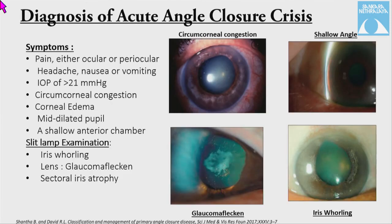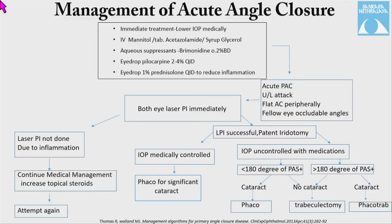Acute angle closure crisis presents with ocular or periocular pain, headache, nausea, or vomiting, and an IOP spike of more than 21 mmHg with circumcorneal congestion. Corneal edema can be seen. The pupil may be mid-dilated. There can be sphincter damage. Slit-lamp examination shows a shallow anterior chamber with Van Herick grade 1. Iris whorling due to ischemia may be seen, and glaucoma flecken — due to ischemia of the anterior lens capsule — and sectoral iris atrophy can be present.